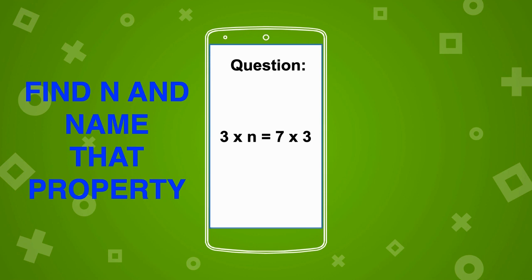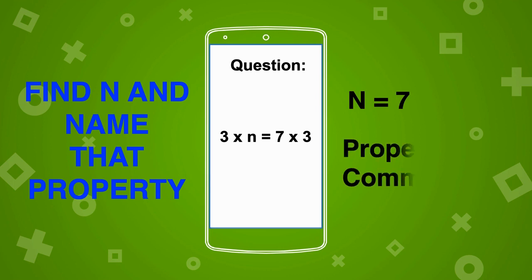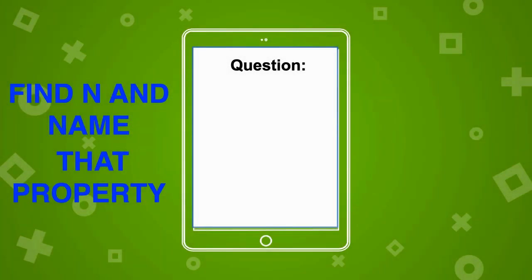If you said n is equal to 7, you are correct — your brain is percolating! And if you said that the property is the commutative or the order property, you are also correct. Beautiful job! Try this: find n and name that property.